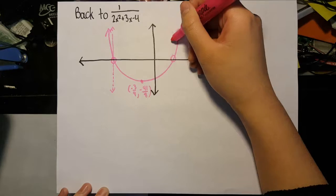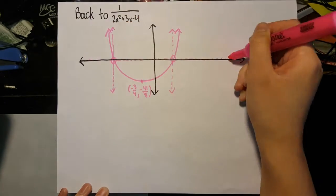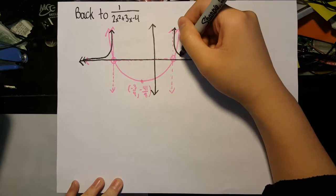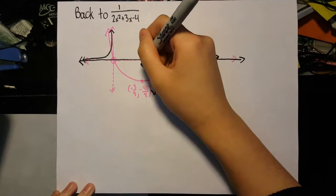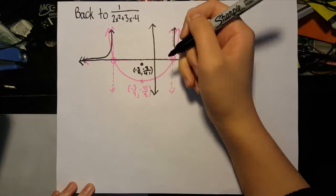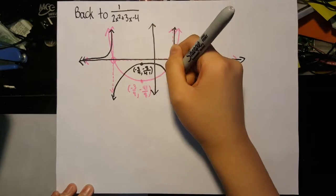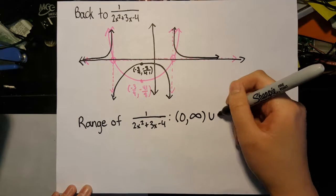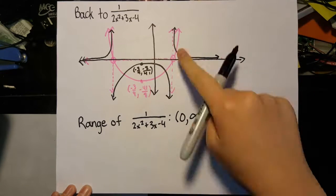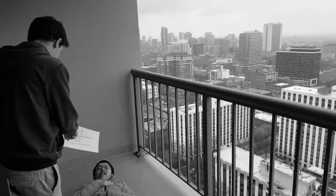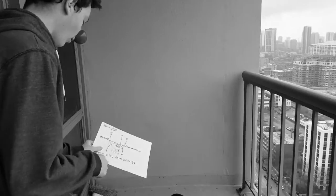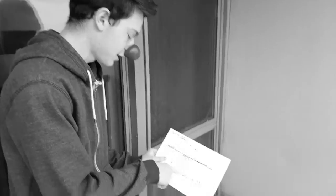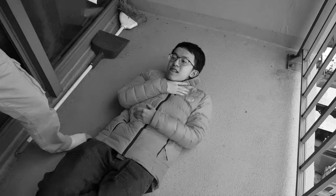So because it is negative, the magnitude is lower near 0. The y value of the maxima in this region is negative 8 over 41 in the graph of 1 over 2x squared plus 3x minus 4, meaning that the range of this region is negative infinity to negative 8 over 41. Putting this all together, the range of 1 over 2x squared plus 3x minus 4 is the union of 0 to infinity and negative infinity to negative 8 over 41.